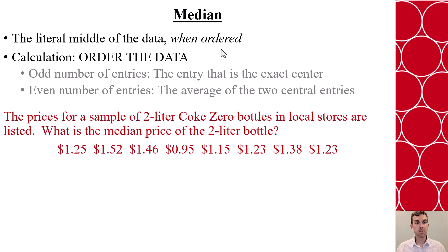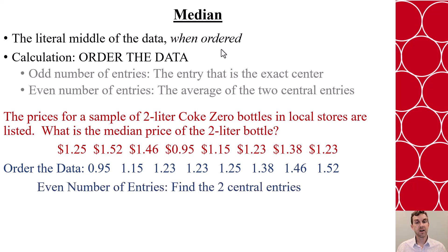If we take our same problem that we had just a minute ago and say we want to determine the median price, the first thing we'll do is order our data. Now we can then say that our data is ordered. Let's find that central most value, and since there's eight, we're going to have to find the two central most entries.